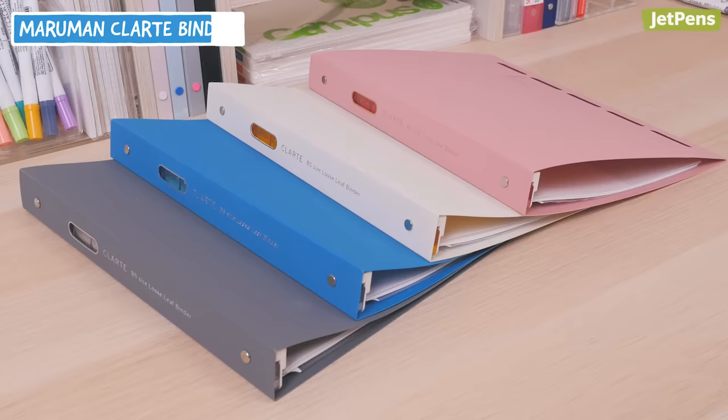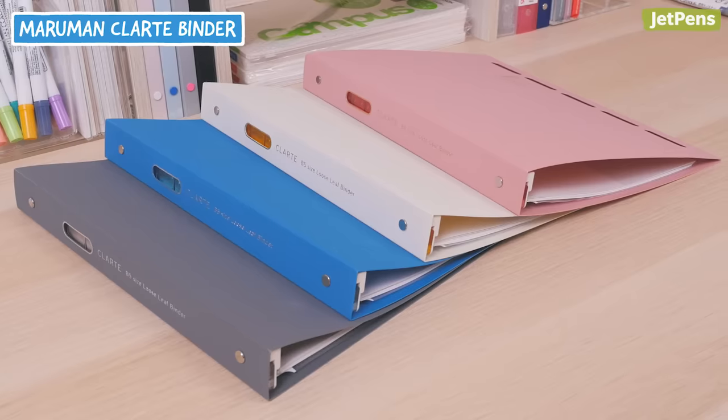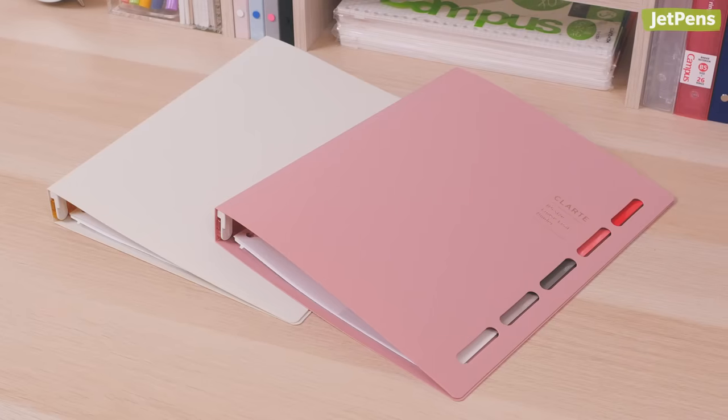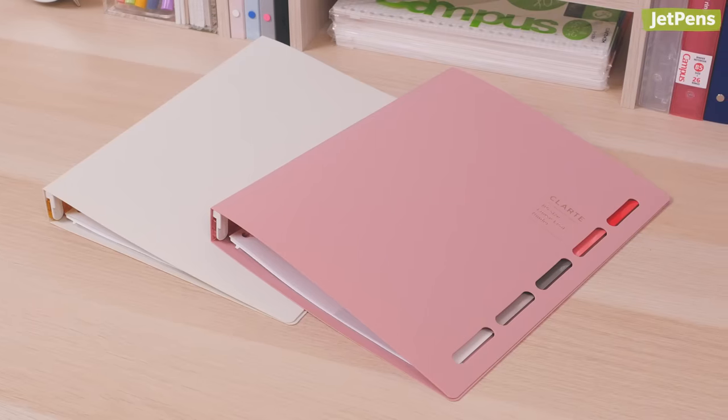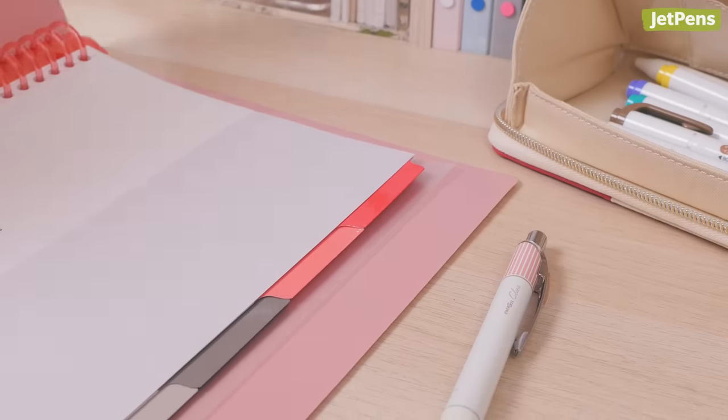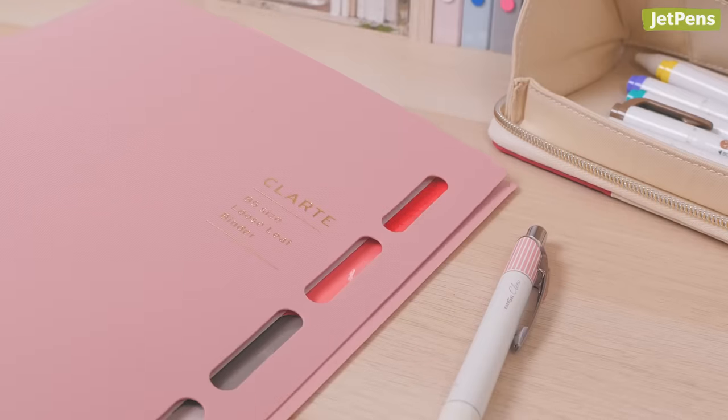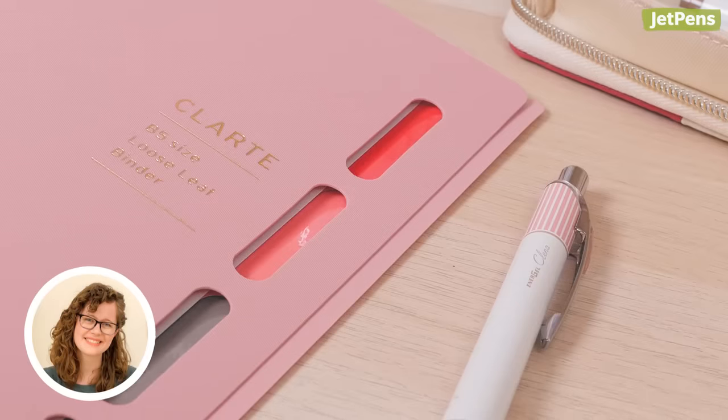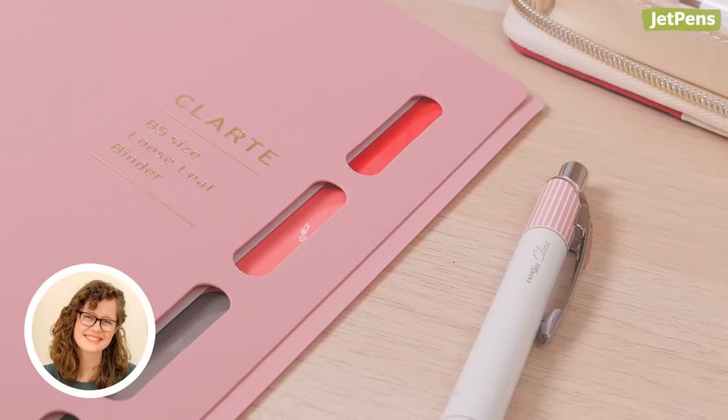But those who want cuter stationery for class notes should check out the Clarte. It comes in hues like pastel pink and cream, with coordinating index tabs. While it doesn't have the same cutouts as the 5-chart binder, you can label the index tabs and see them without opening the cover, which is also pretty handy. They actually do have pretty aesthetic color combinations, in my opinion.